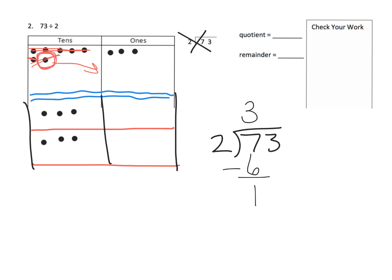We're going to decompose that leftover ten into the ones column: 1, 2, 3, 4, 5, 6, 7, 8, 9, 10. So instead of having one ten left over, we break it up and now have thirteen ones. In the standard algorithm, we bring that 3 down, giving us a ten plus three ones — or 13 ones — right here.